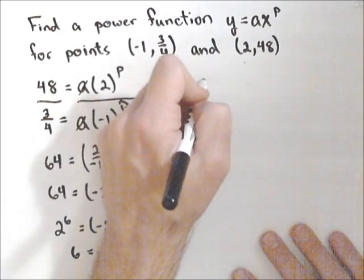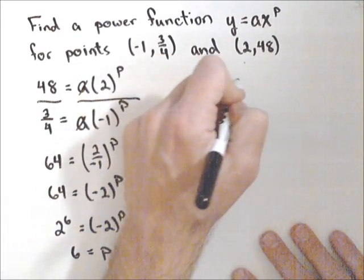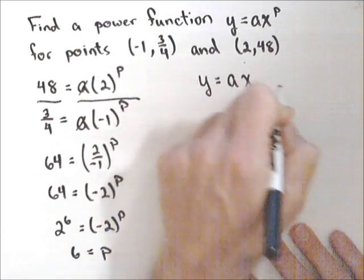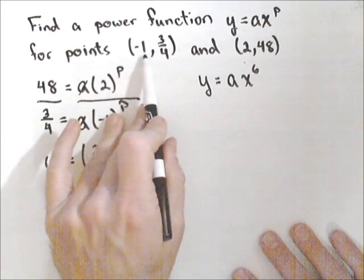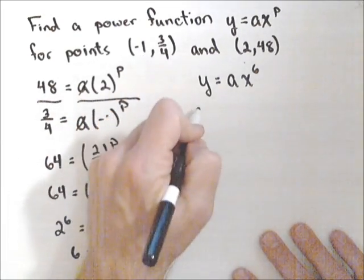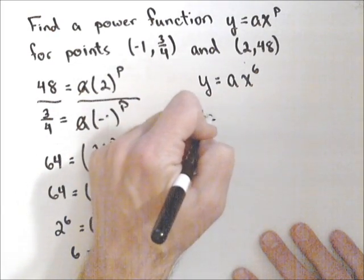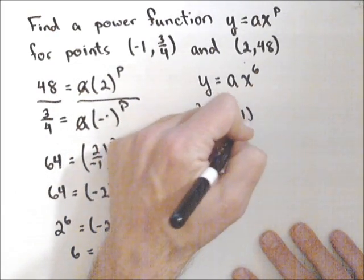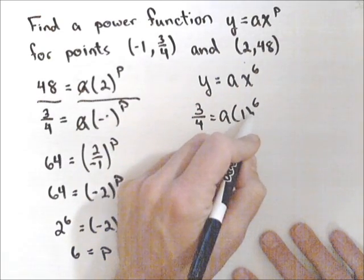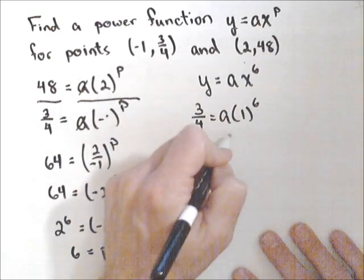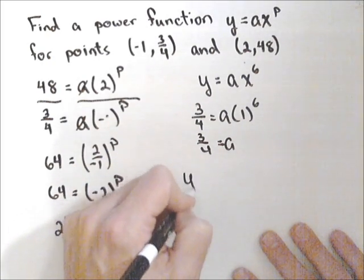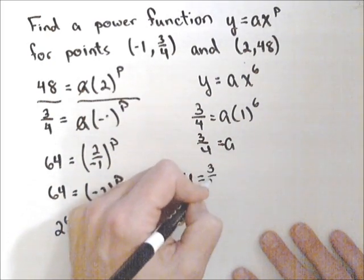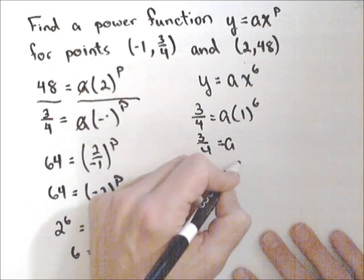Now I can start to put together my function: y = ax^6. I need to find a, so I can use either point. Using (-1, 3/4), when x is -1, (-1)^6 is just 1, so a = 3/4. The power function is y = (3/4)x^6.